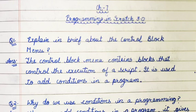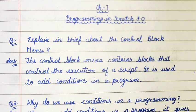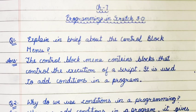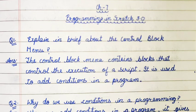Question number one: explain in brief about the control block menu. Answer: the control block menu contains blocks that control the execution of a script. It is used to add loops and conditions in a program.